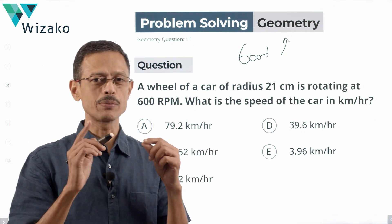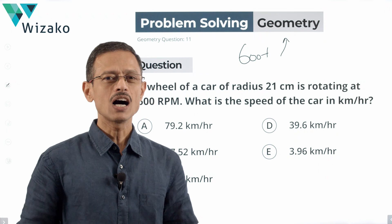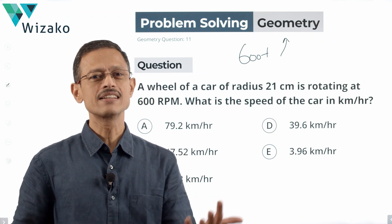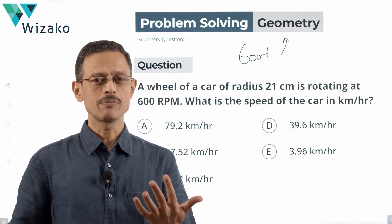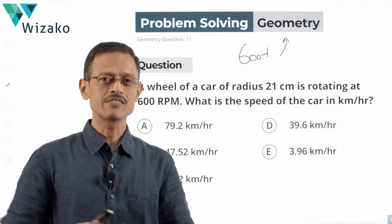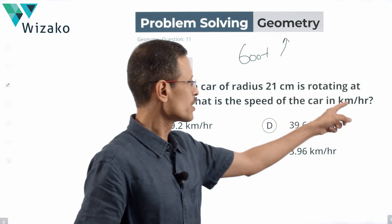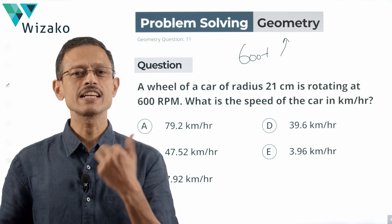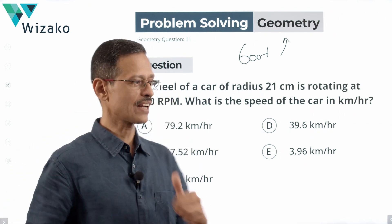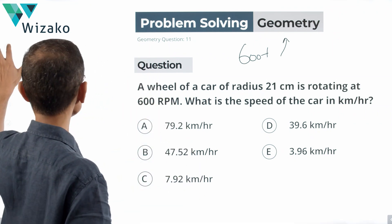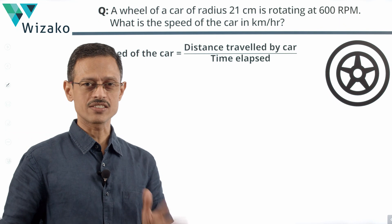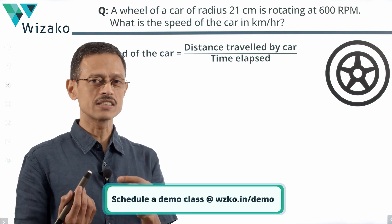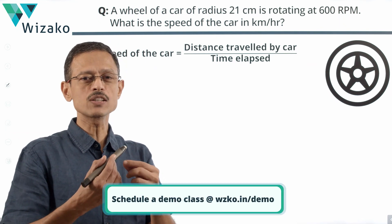What do we have to find out? We need to compute the speed. Speed is nothing but distance traveled divided by time elapsed. What is the number of kilometers traveled in one hour? What is the number of meters traveled in one minute? I'm going to solve this question taking two steps.